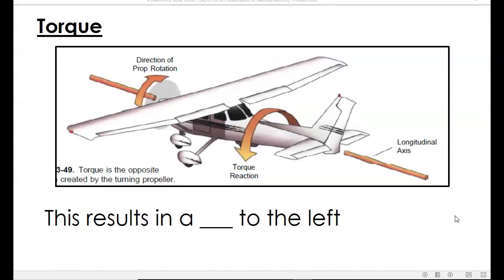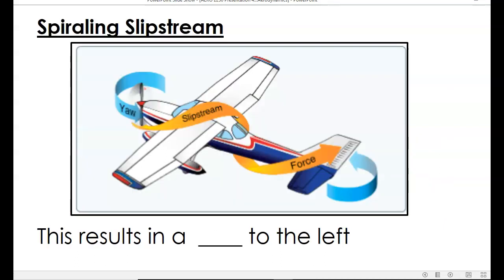Torque is due to Newton's Third Law — for every action there is an equal and opposite reaction. On American-made aircraft, the propeller rotates clockwise as seen from the pilot station. Because the propeller is rotating clockwise, that makes the airplane, due to Newton's Third Law, tend to roll in the opposite direction — to the left. So as a result of torque, the airplane rolls to the left. Spiraling slipstream occurs because of the propwash — the propeller wash tends to travel around the airplane until it hits the left side of the tail, forcing the tail to the right, and that makes the airplane yaw to the left.